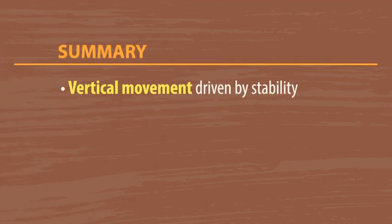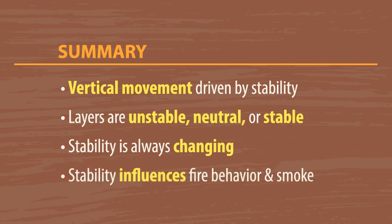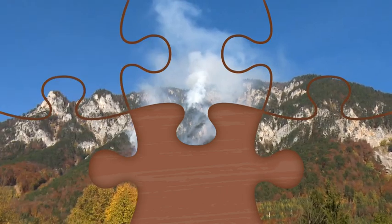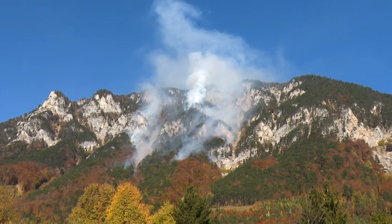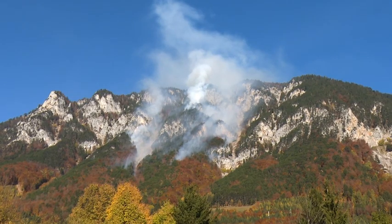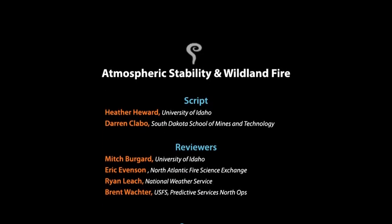So, to review, vertical air movement is driven by the stability of the various layers of the atmosphere. The layers of the atmosphere can be unstable, neutral, or stable, and are always changing. They have an important influence on fire behavior and smoke. Stability is just one piece of the fire behavior puzzle. So, we must always consider the other weather elements, as well as the fuels and topography surrounding the fire, to be able to anticipate fire behavior and plan for safe and effective fire management.